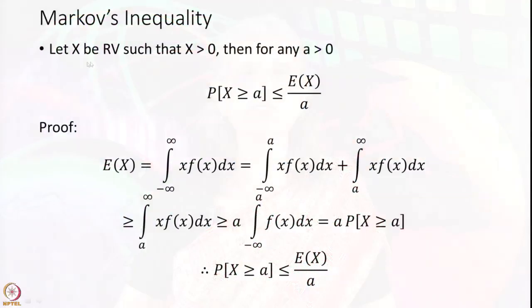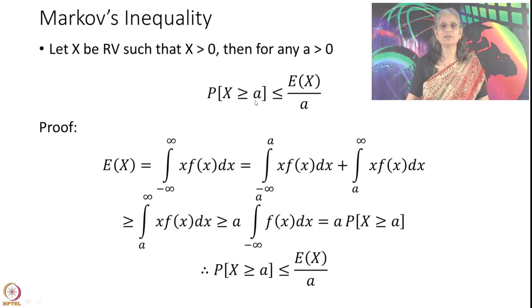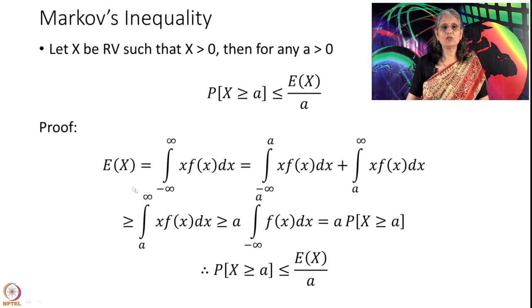Markov inequality is defined as follows: let x be a random variable such that it is a positive random variable, and let a be any positive number. Then the probability that the random variable takes a value larger than a is smaller than the expected value of x divided by a. The proof is very simple: the expected value of x equals the integral from minus infinity to infinity of x f(x) dx.